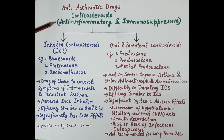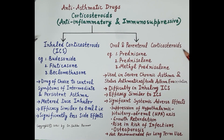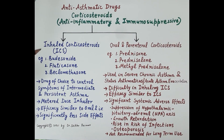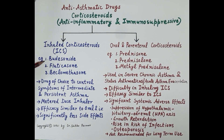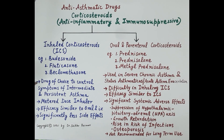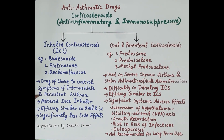Corticosteroids are anti-inflammatory and immunosuppressive. There are two types: inhaled corticosteroids and oral/parenteral corticosteroids. Commonly used inhaled corticosteroids are budesonide, fluticasone, and beclomethasone.